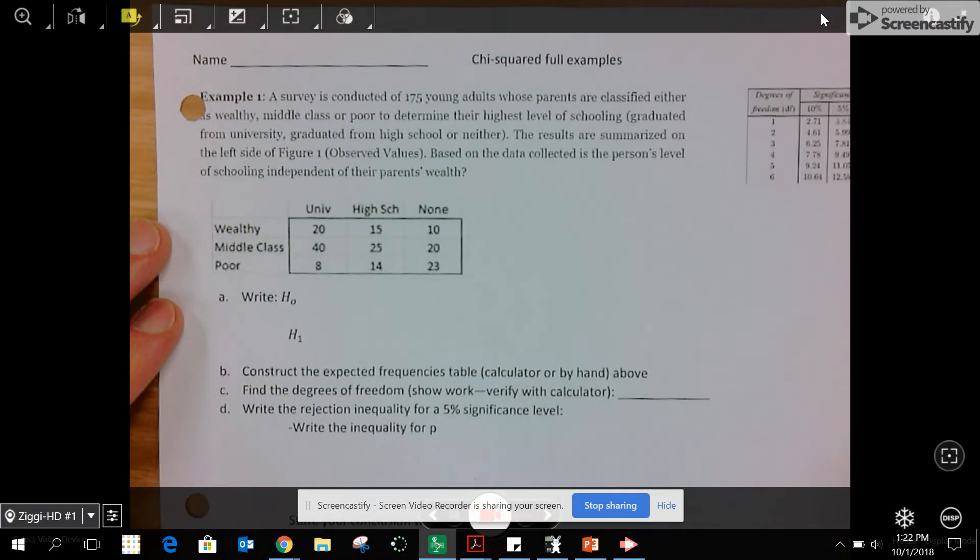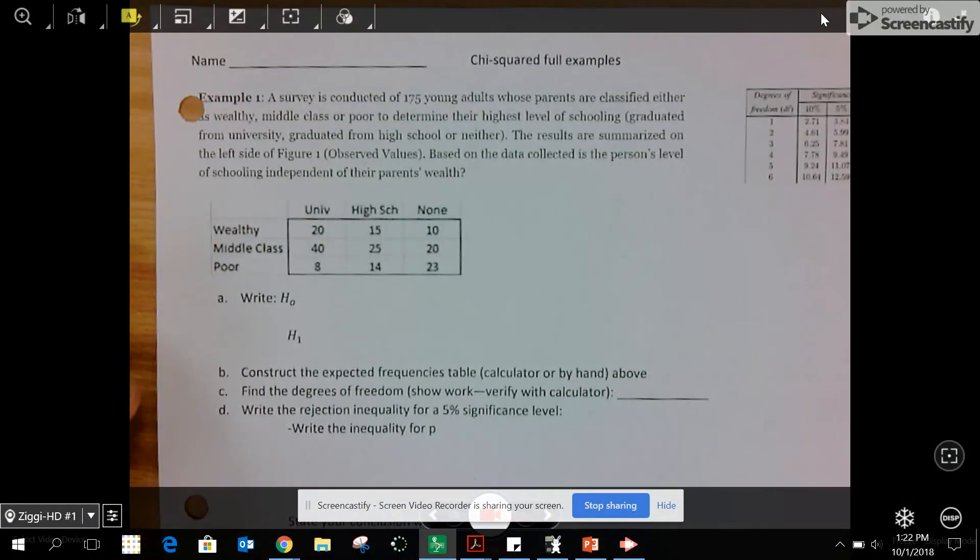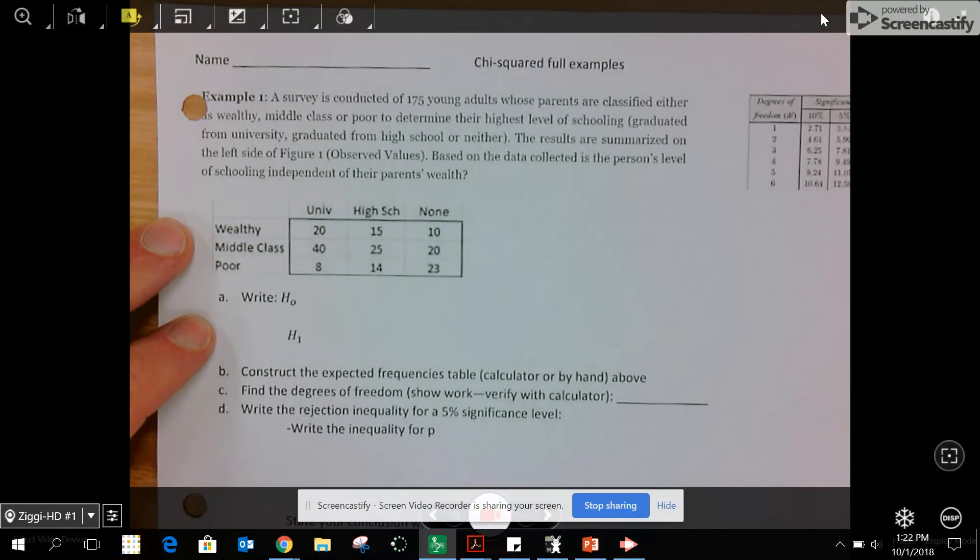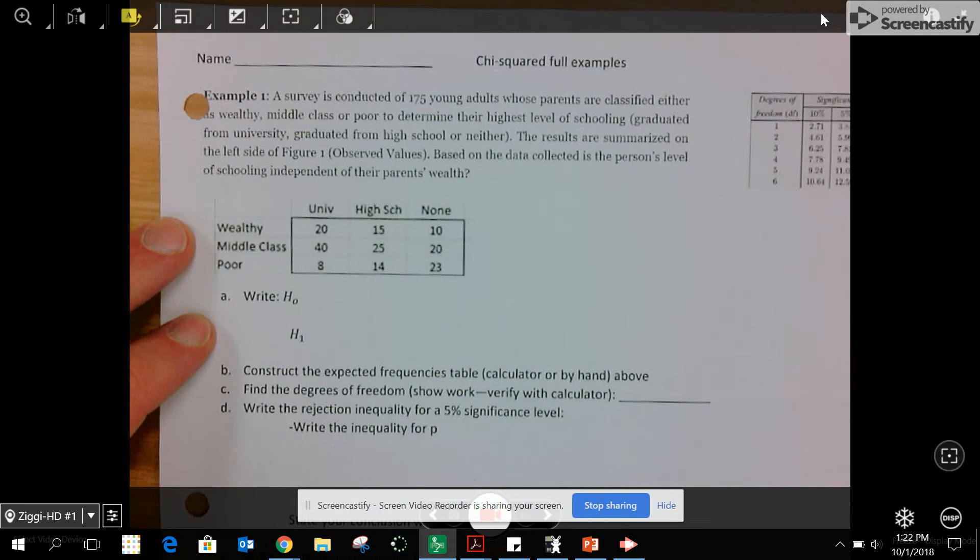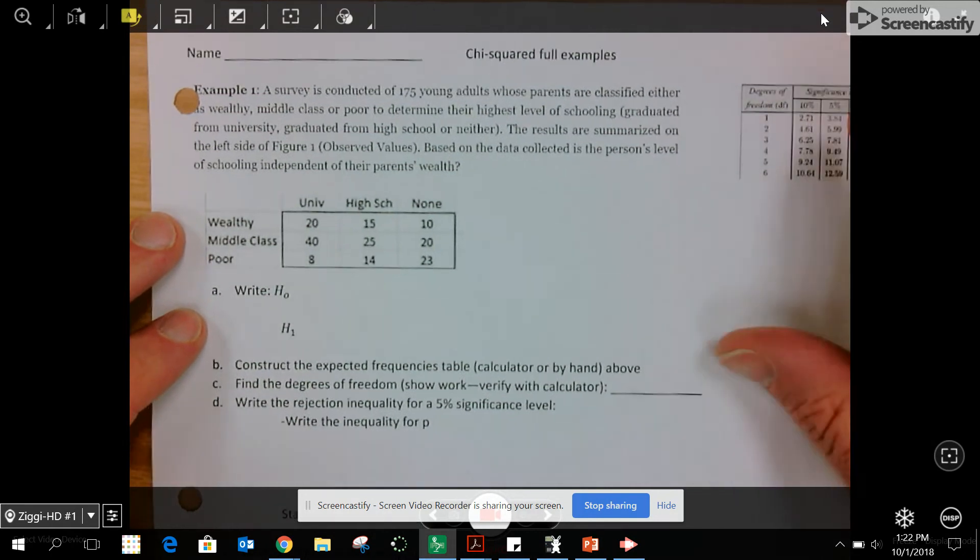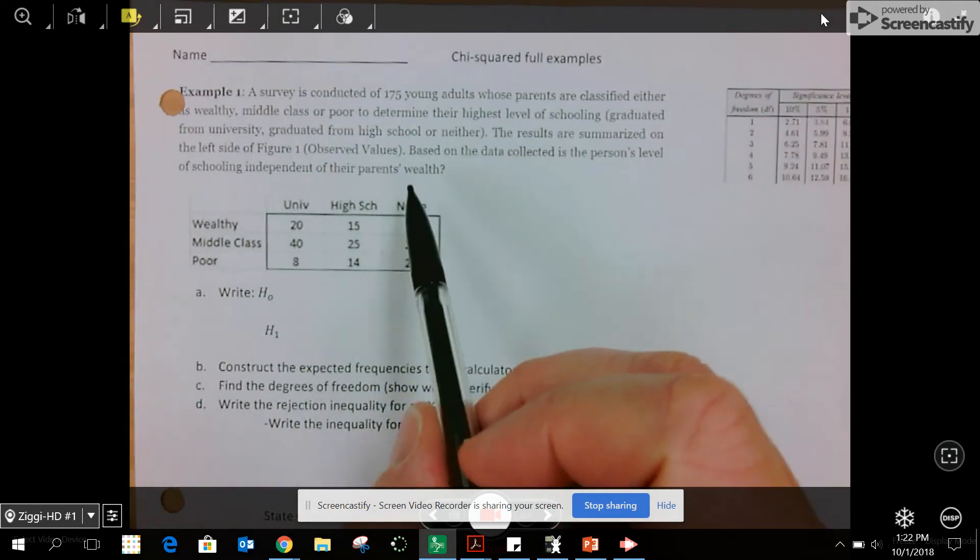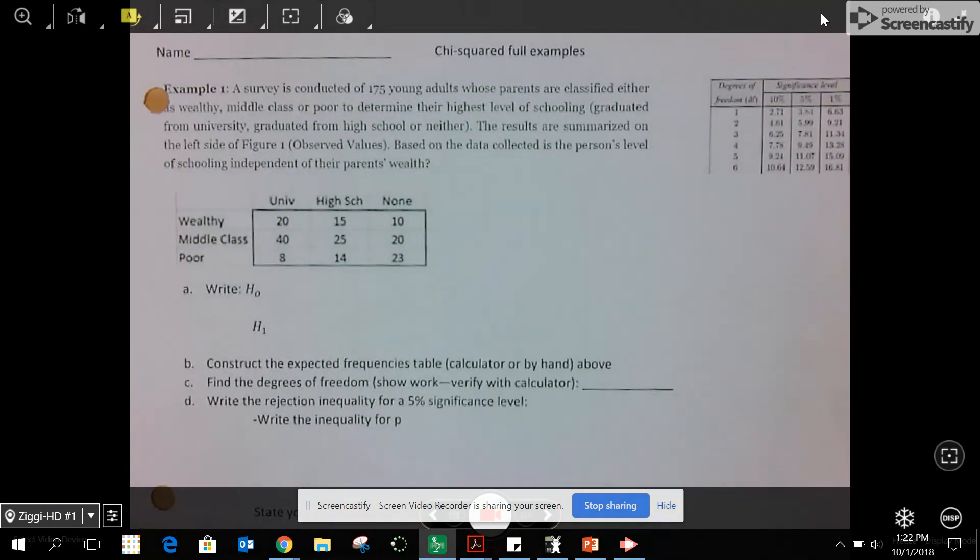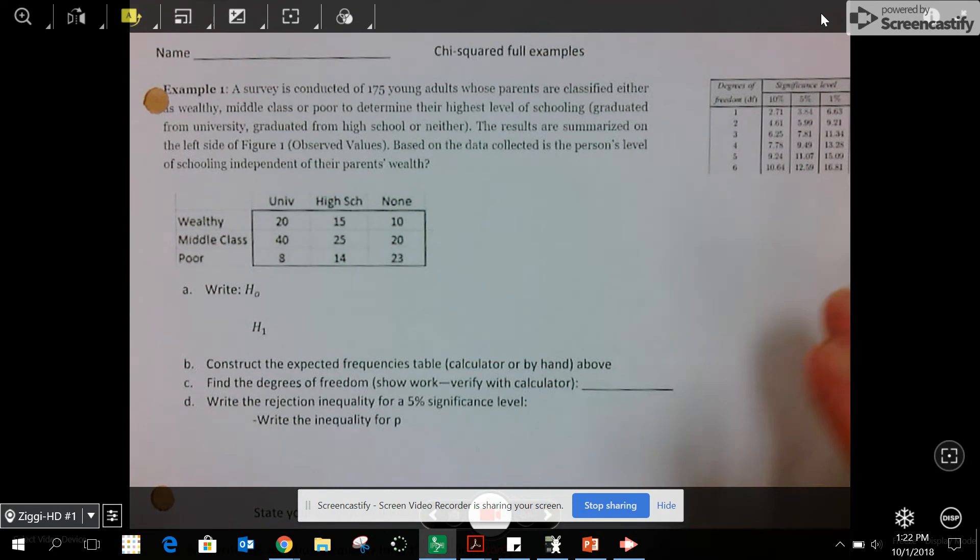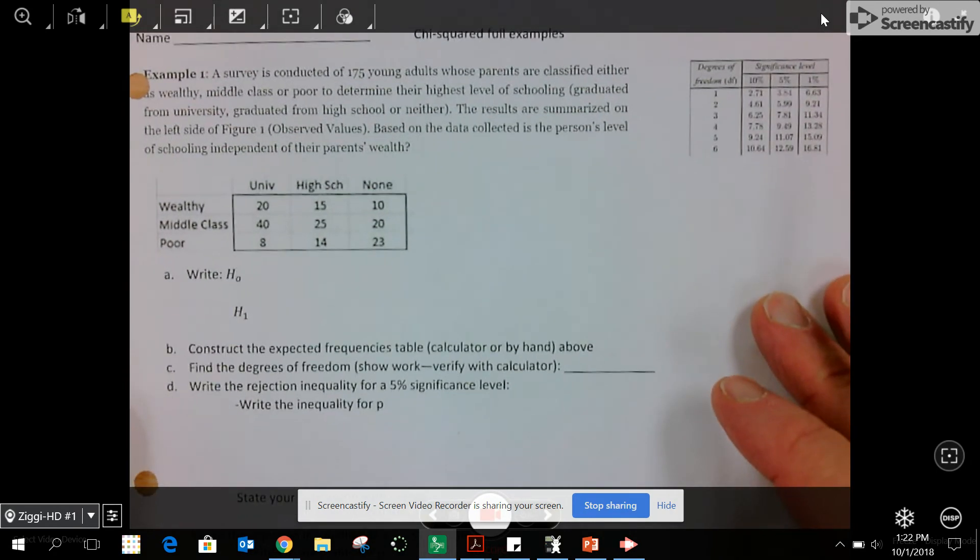This video goes with the problem on the back of the rock paper scissors lab. This is a chi-squared full problem. I'm going to take you through every step of the problem so you can see a full example. You can use this to check or review in class.